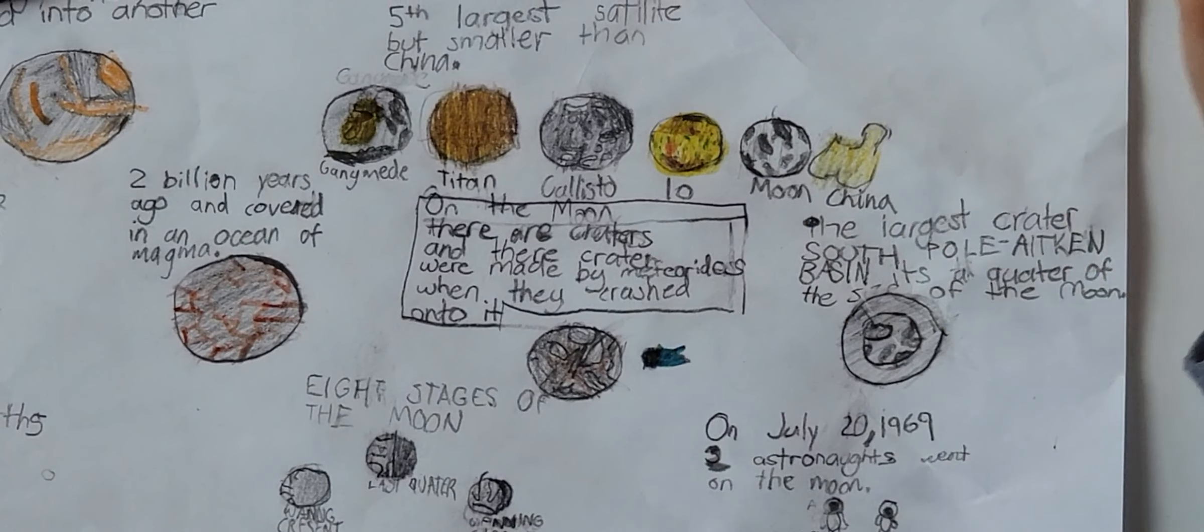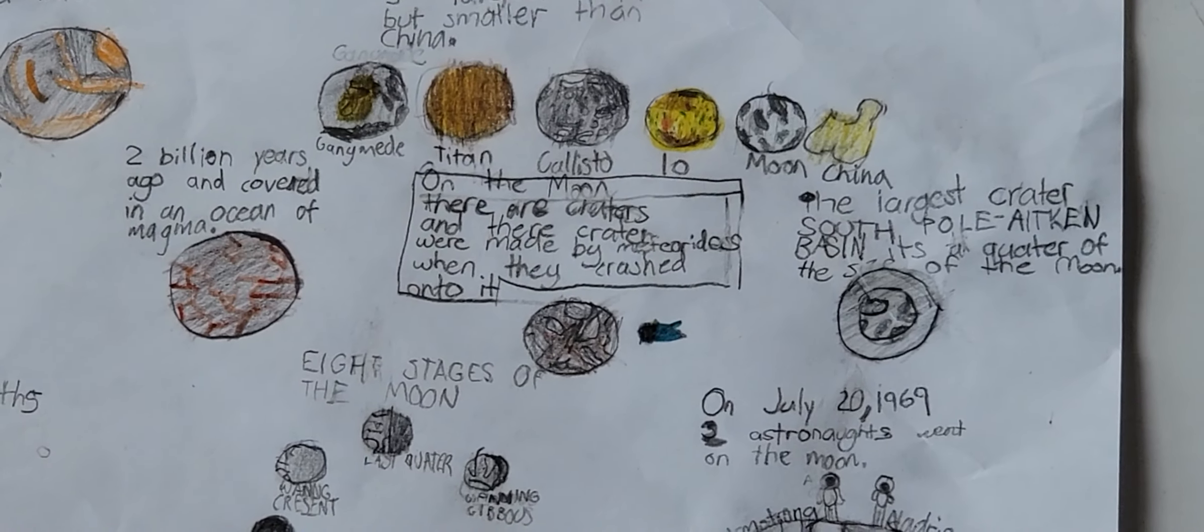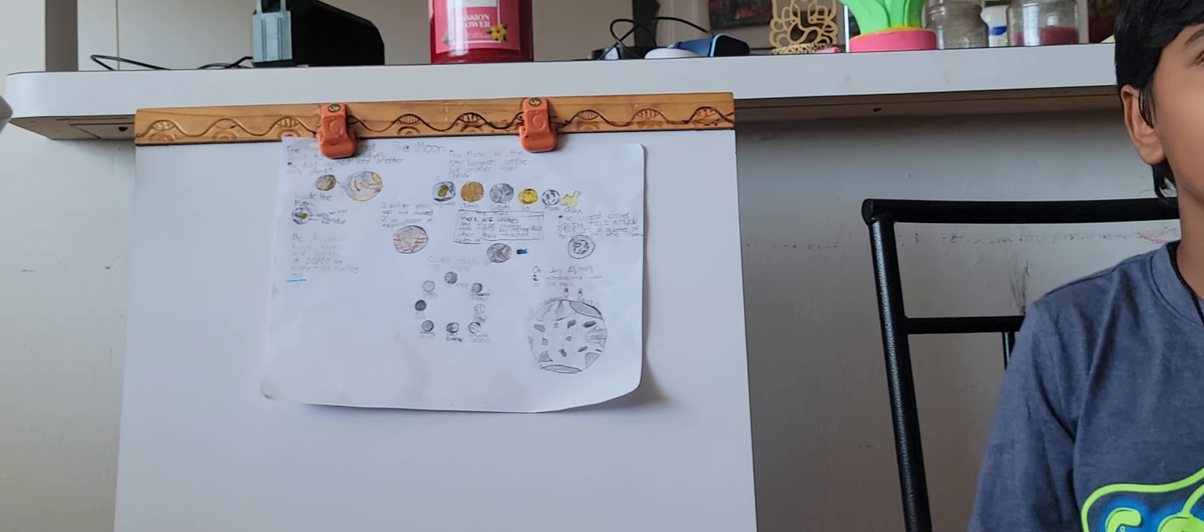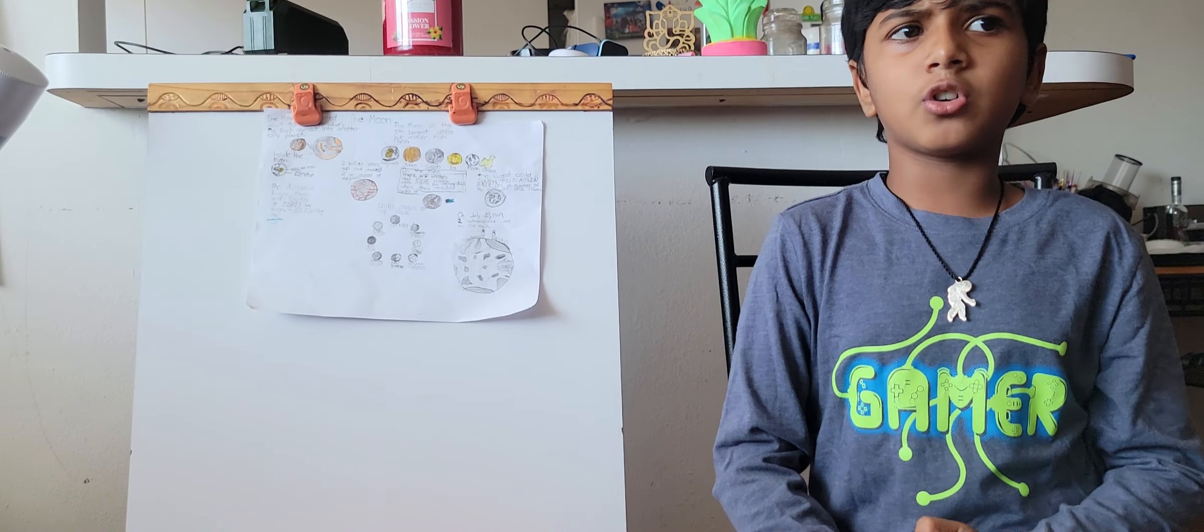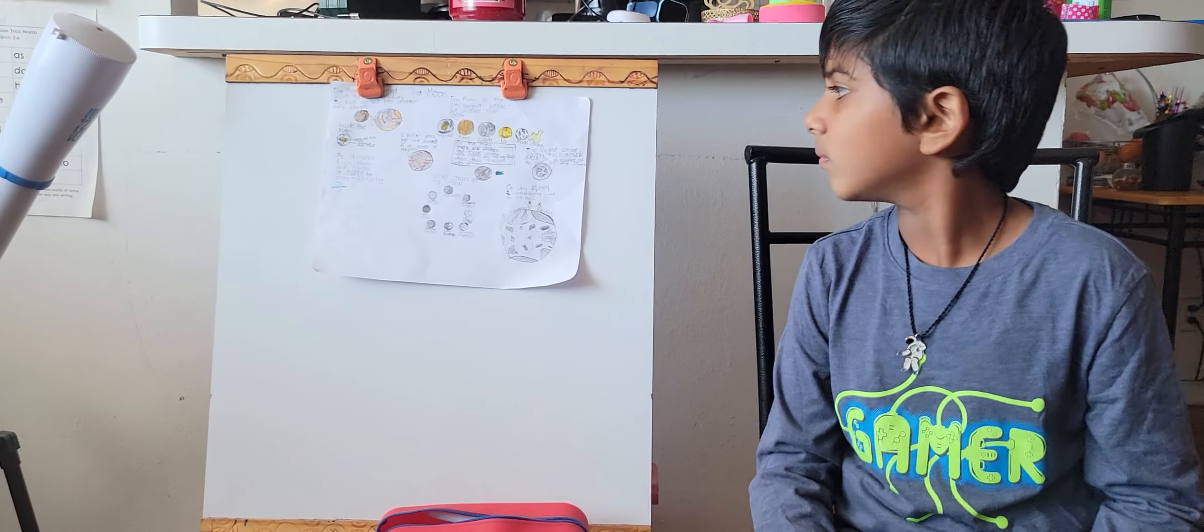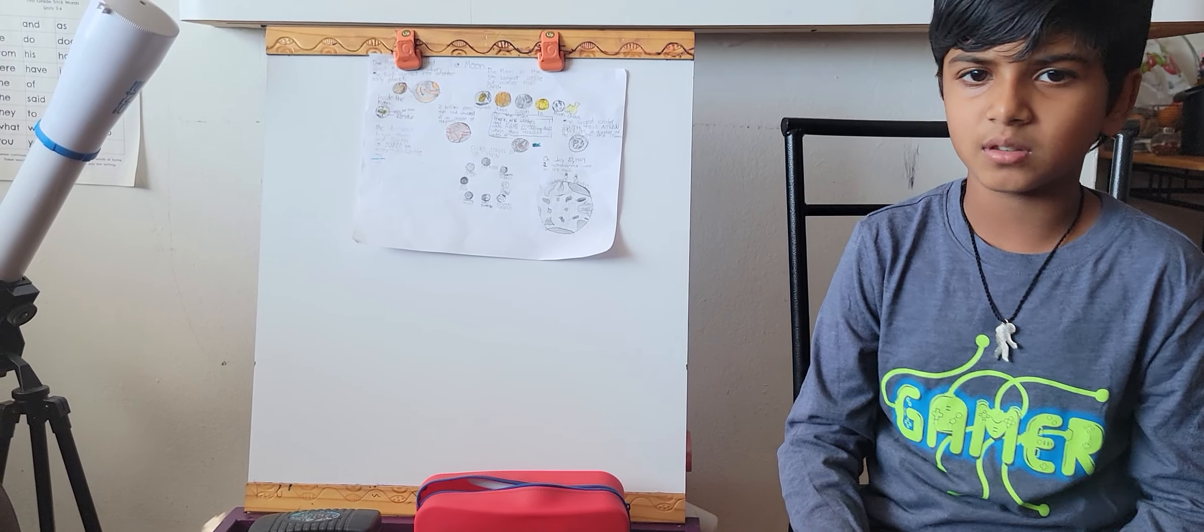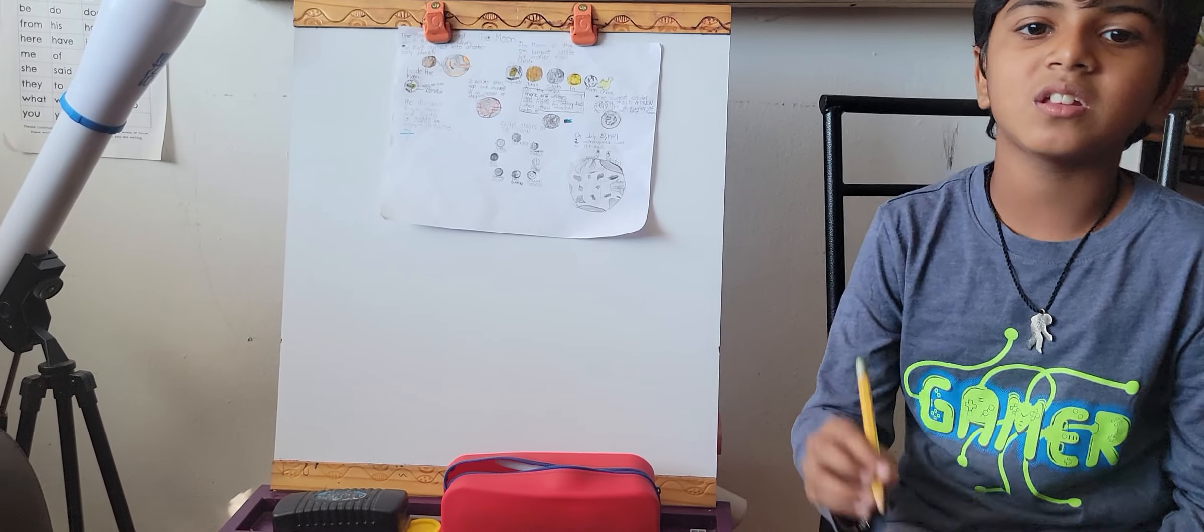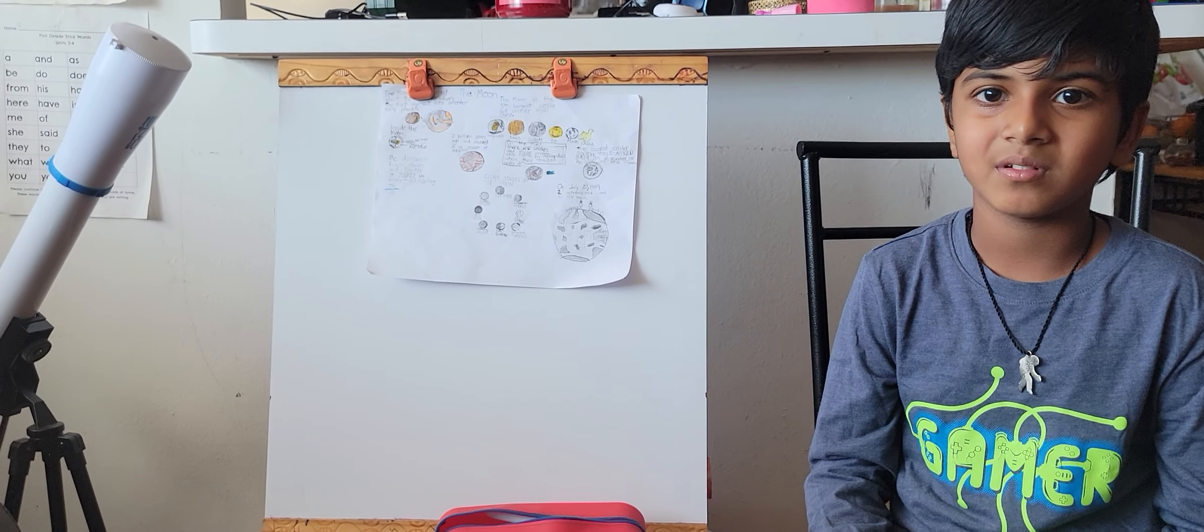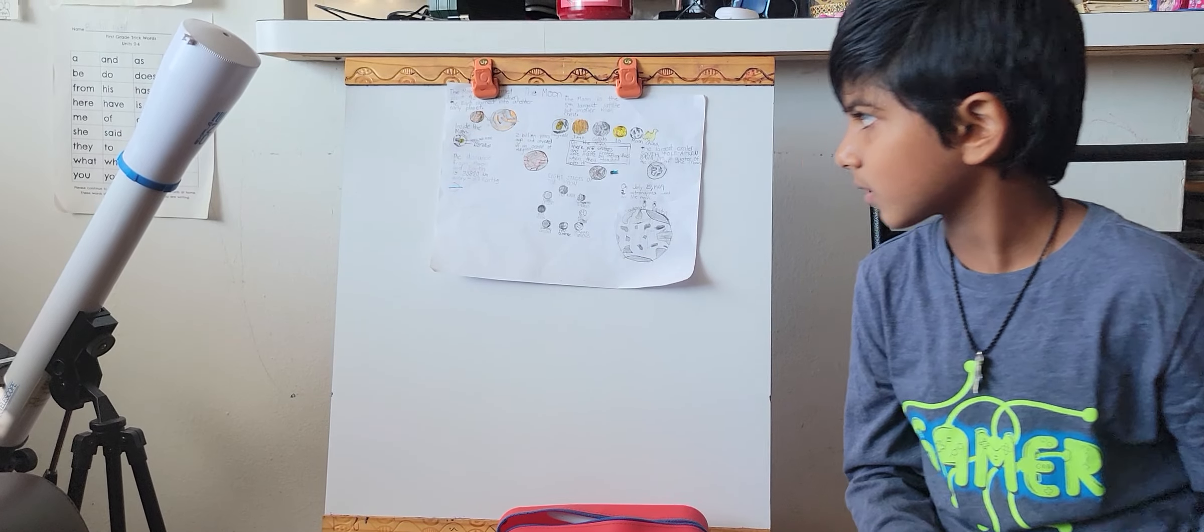So now we are looking at how the moon is right now. On the moon there are craters. Do you know how the craters were formed? The craters were formed by meteors slamming into it. The largest crater is South Pole-Aitken Basin. It's like a quarter of the size of the moon. It's super big, even bigger than the US.